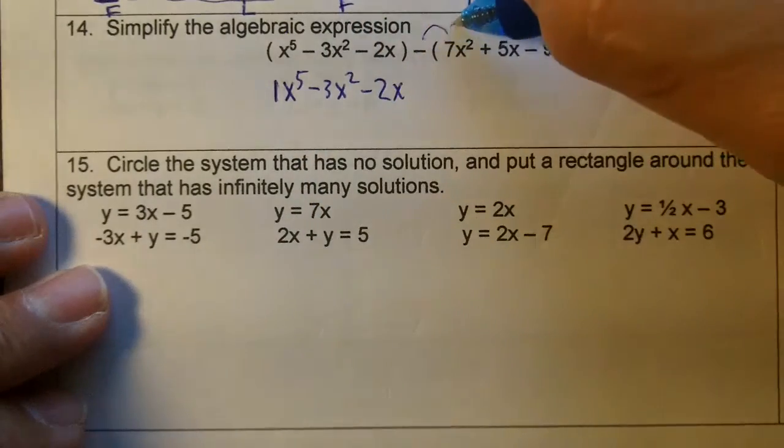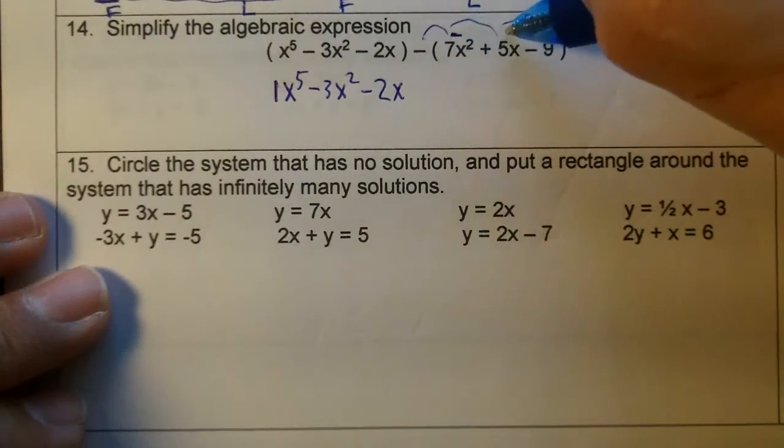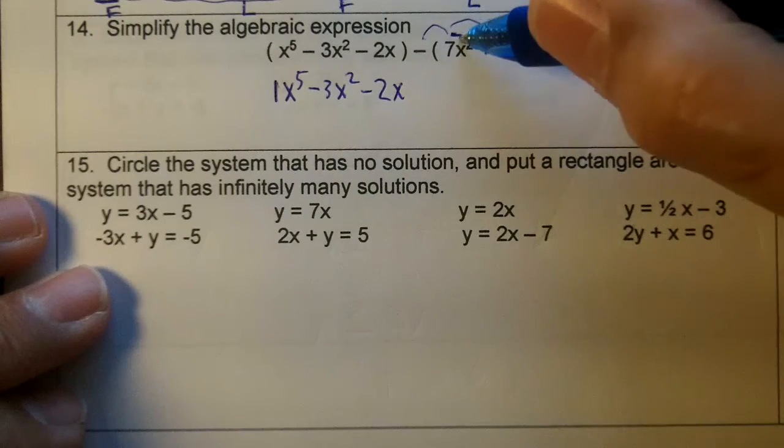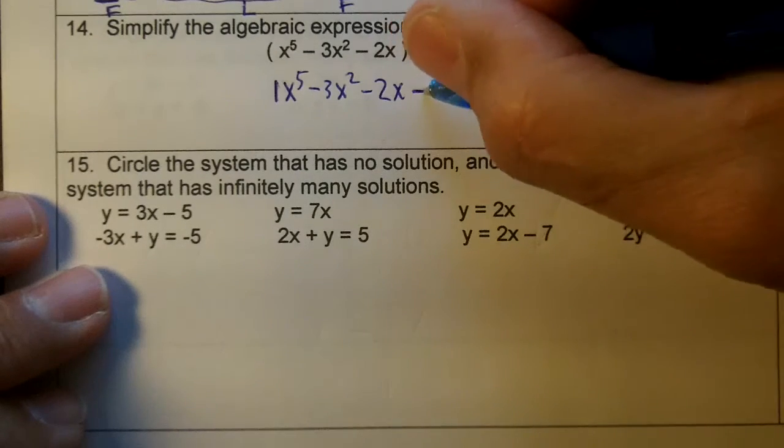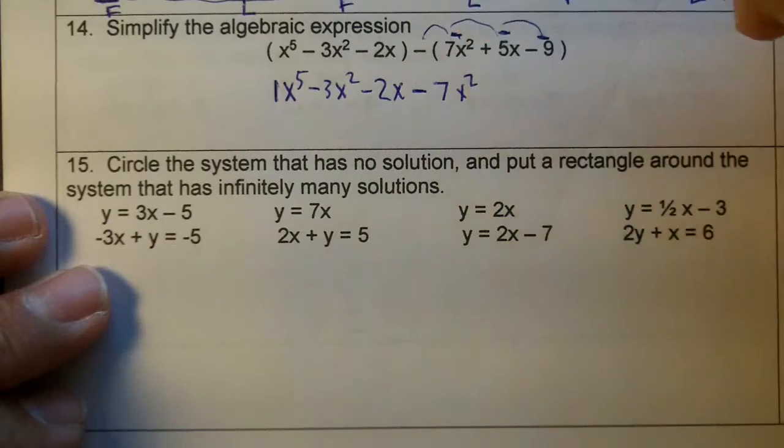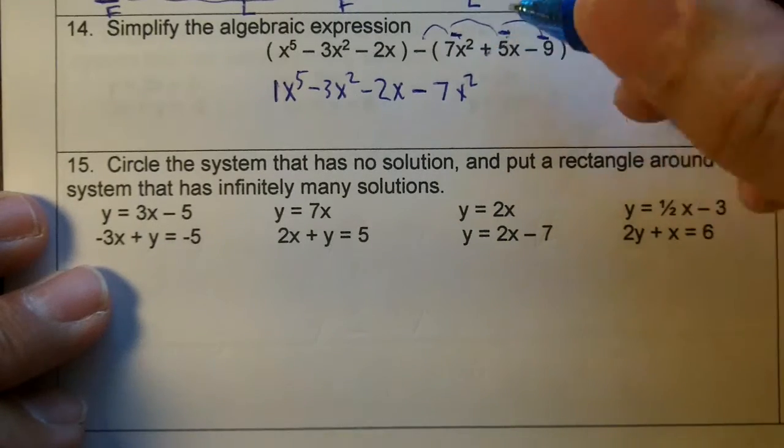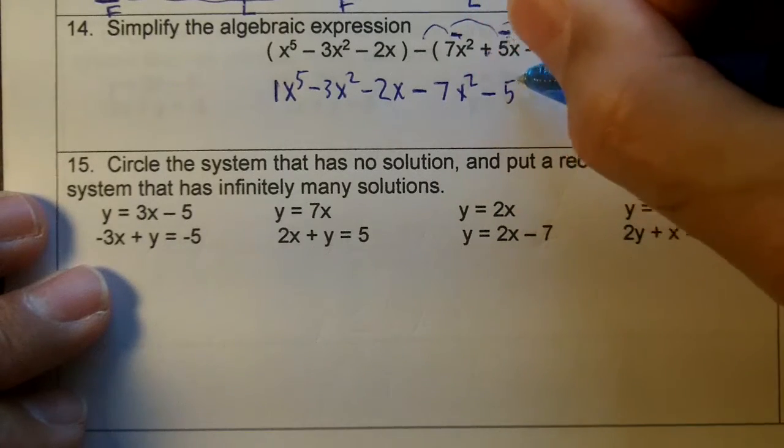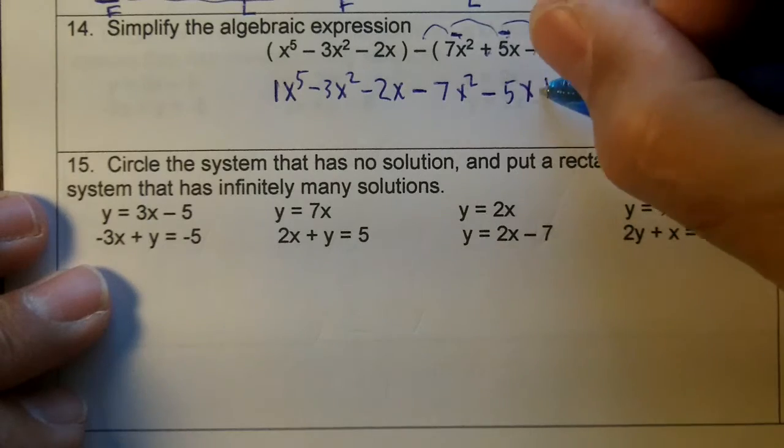This minus is going to distribute in it. So we're going to put a minus here, here, and here. A negative 1 times 7 is a negative 7x squared. The 5 will turn from a positive to a negative, minus 5x, and then plus 9 in it.